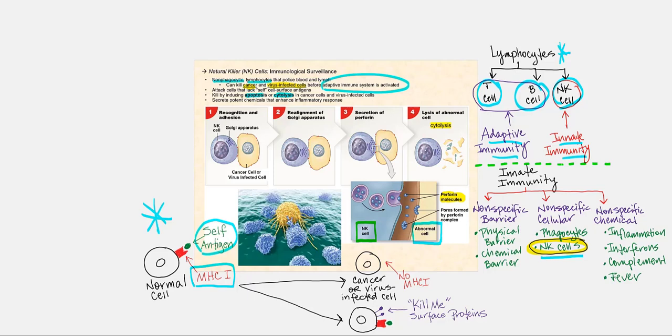However, if a normal cell has transformed into a cancer cell or has been hijacked by a virus, two scenarios can occur. Number one, it will no longer display MHC1 with a self-antigen. Or if it does display MHC1 with a self-antigen, this abnormal cell will display what I call 'kill me' surface proteins — essentially saying 'attack me, immune cells, I am not normal.' These are what NK cells are looking for.